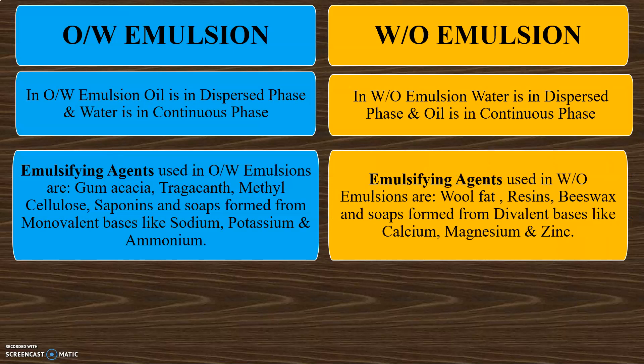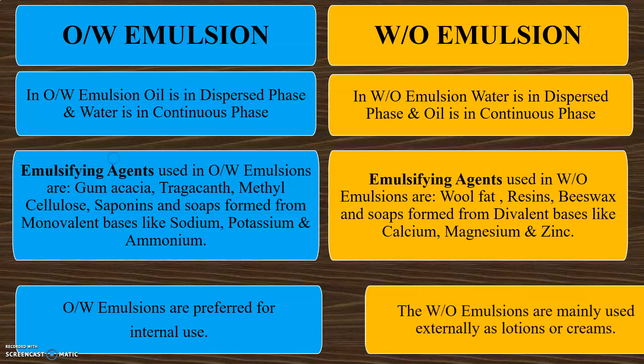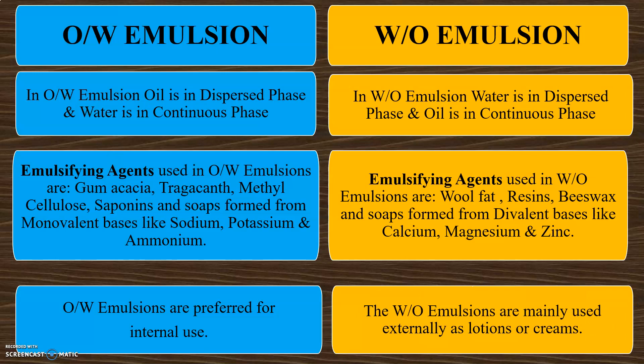Whereas the emulsifying agents used in W/O type emulsions are wool fat, resins, beeswax, and soaps formed from divalent bases like calcium, magnesium, and zinc. The O/W emulsions are preferred for internal use, whereas W/O type emulsions are mainly used externally as lotions or creams.